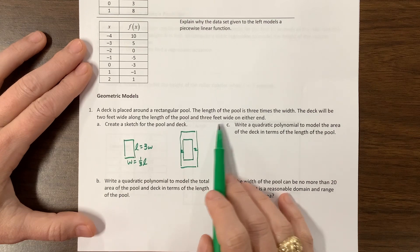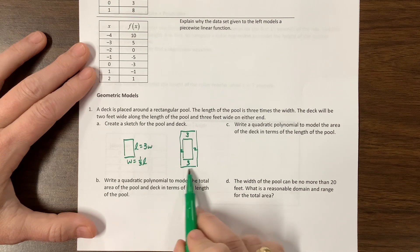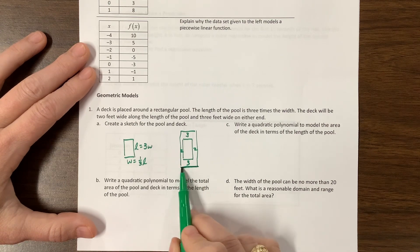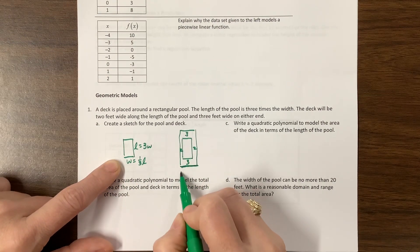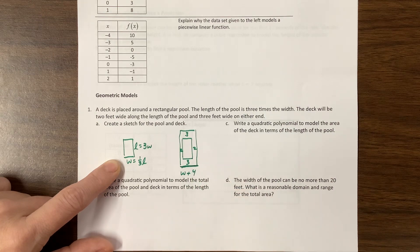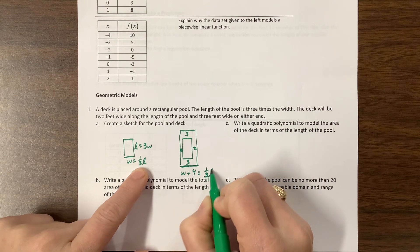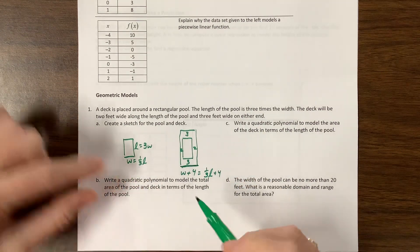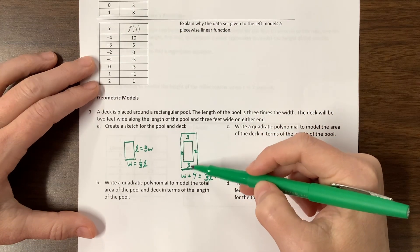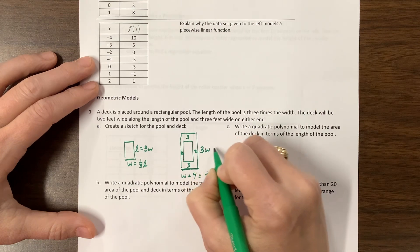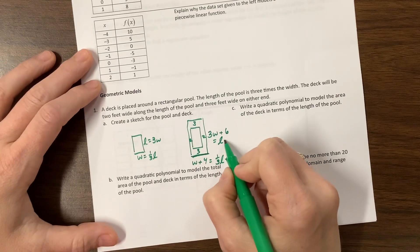Then it'll be three feet wide on either end. So this is going to be three feet here, this is going to be three feet here. So this total distance, this total new width, the width of the total thing, would be the width plus two on this side plus two more here. So this is w plus four. Or, if you're writing it in terms of l, this would be equal to a third of l plus four. The other one going this way, here's three w, and now I've had to add three this way and three this way. So this side would be three w plus six, which could also be written as l plus six.